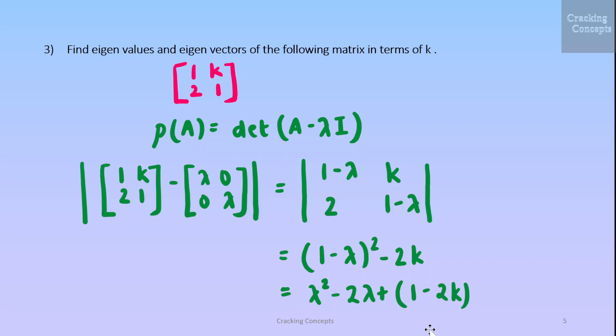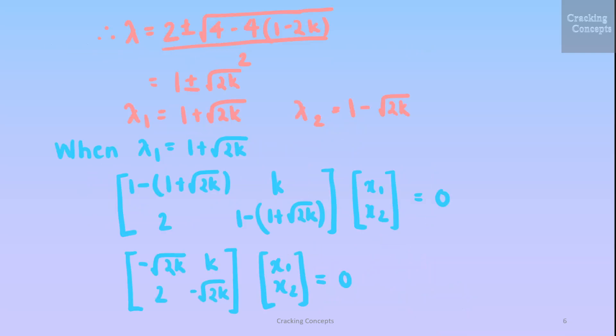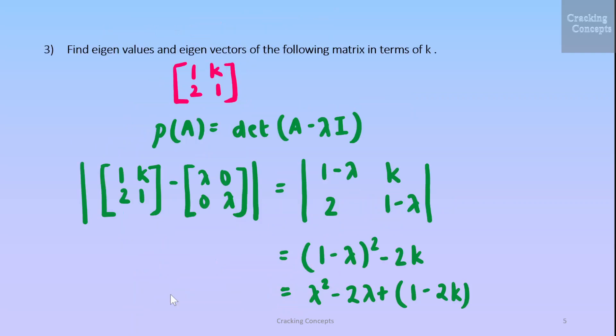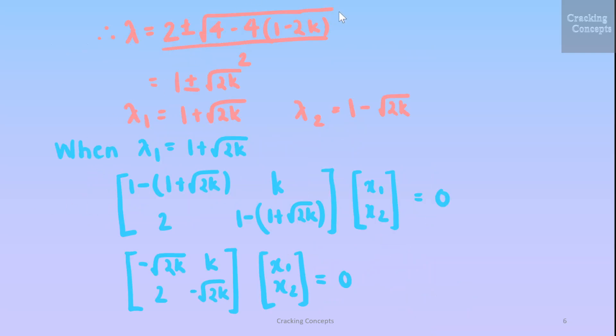In order to find the roots of this quadratic polynomial we'll apply the formula which we already know which is minus B plus or minus root of B square minus 4AC by 2A. That will be 2 plus or minus root of 4 minus 4 into 1 minus 2K by 2. So we'll get the value as 1 plus or minus root of 2K. So we'll have two eigenvalues. We'll take lambda 1 as 1 plus root 2K and lambda 2 as 1 minus root 2K.